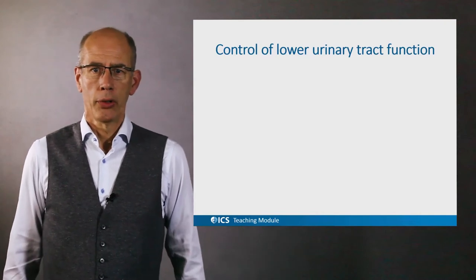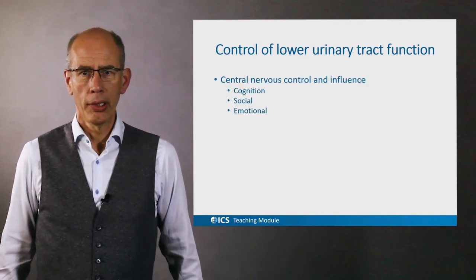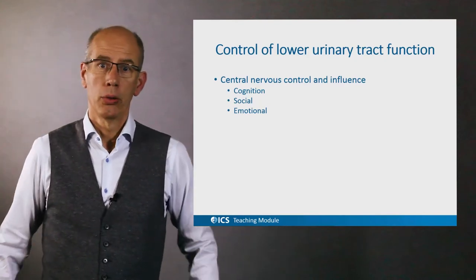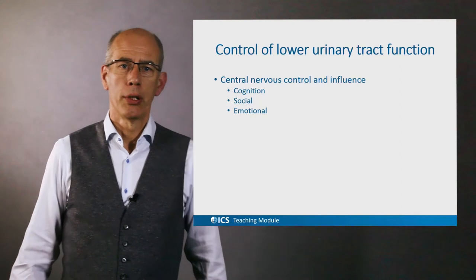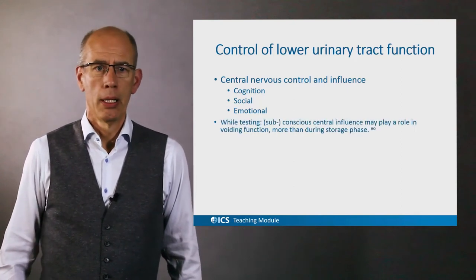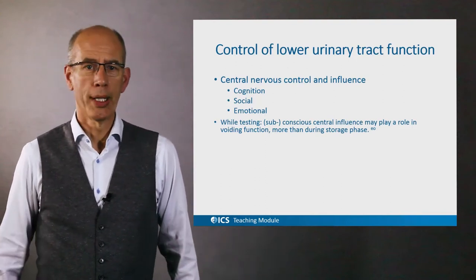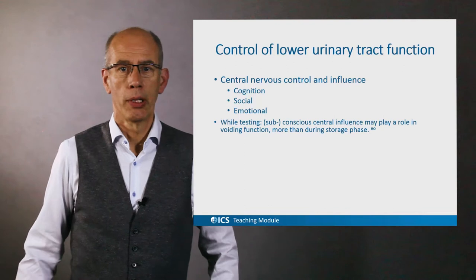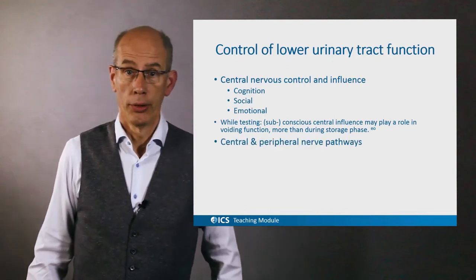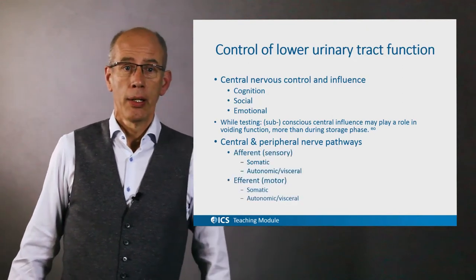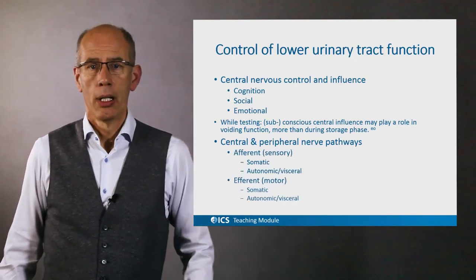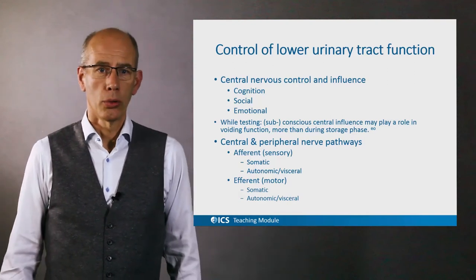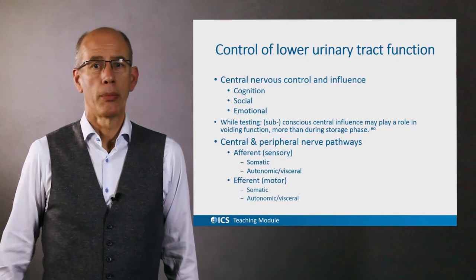Control of lower urinary tract function is by the central nervous system and is under the influence of social and emotional effects. Cognition helps us to void at a socially accepted moment — we can learn when and where to void — and that influences the urethral dynamics of micturition. Intact sensory and intact motor nerve pathways are needed to control lower urinary tract function as initiated by the central nervous system.